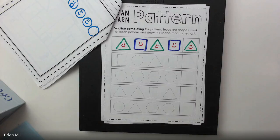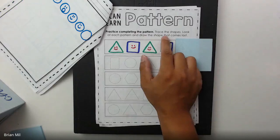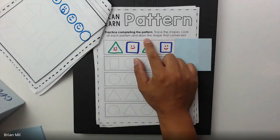It should say the word Pattern. This page is called Pattern. Make sure you have something to write with, and we're going to start right away. I did the first one already, but don't worry because I did have another class to teach. It says Pattern. I can learn Pattern. Practice completing the pattern. Trace the shapes and look at each pattern and draw the shape that comes last. Pretty simple, right? So we're going to do this together.